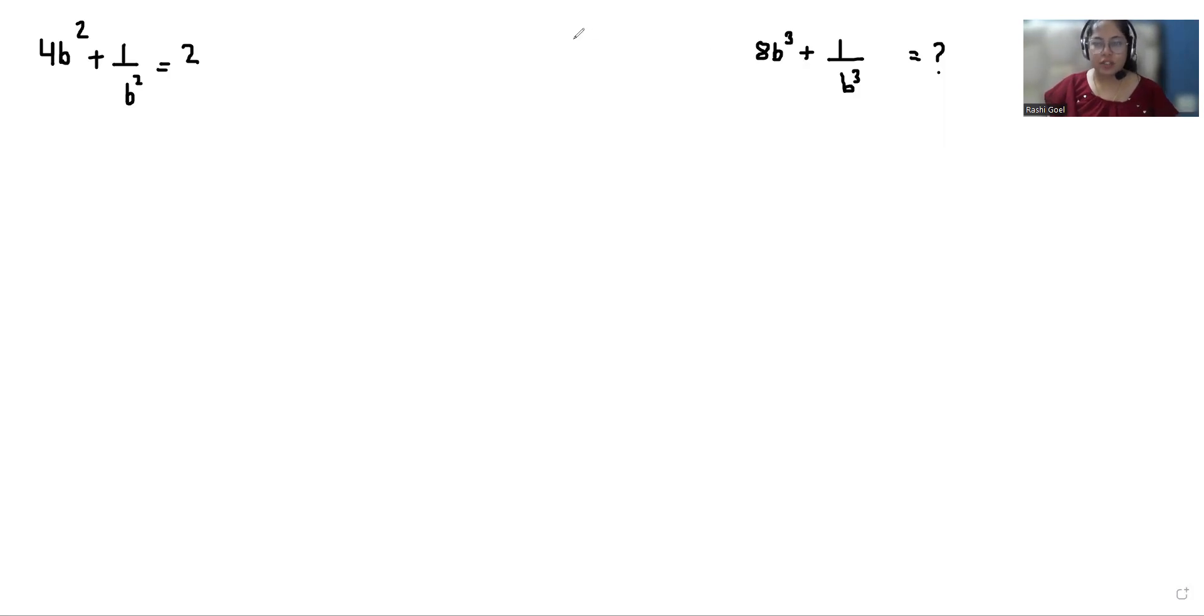So let's start with today's video solution. First, 4b square I can write as 2b whole square plus 1 over b whole square equals 2. Here we can use the formula a square plus b square equals a plus b whole square minus 2ab.